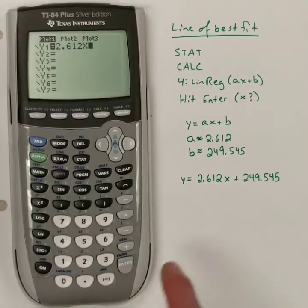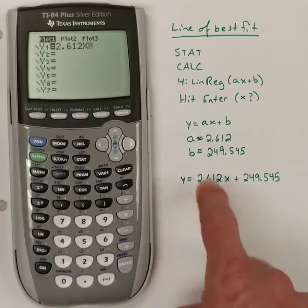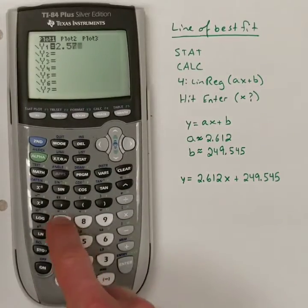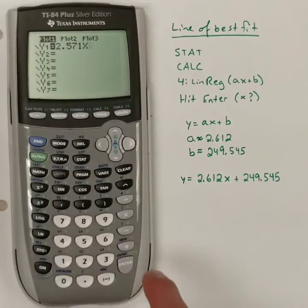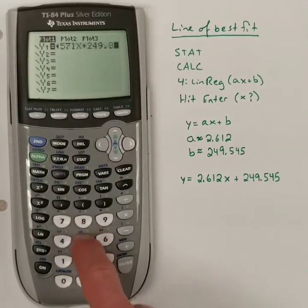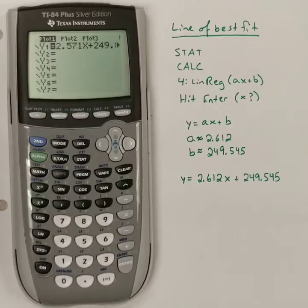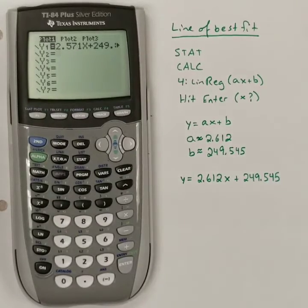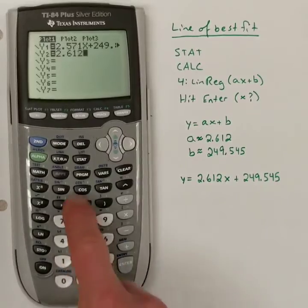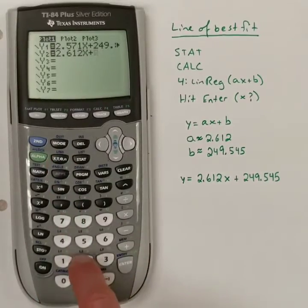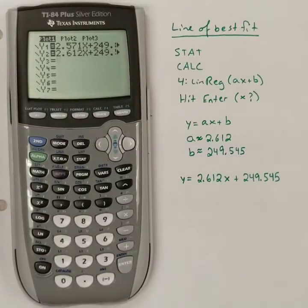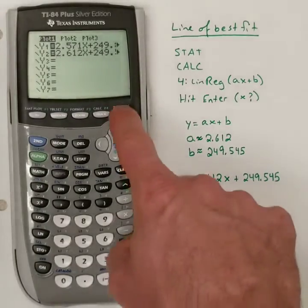2.571x plus 249.857. Enter. And then I'll do the one that we found with the calculator. 2.612x plus 249.545. Hit Enter. And then I'm going to go to the graph again.